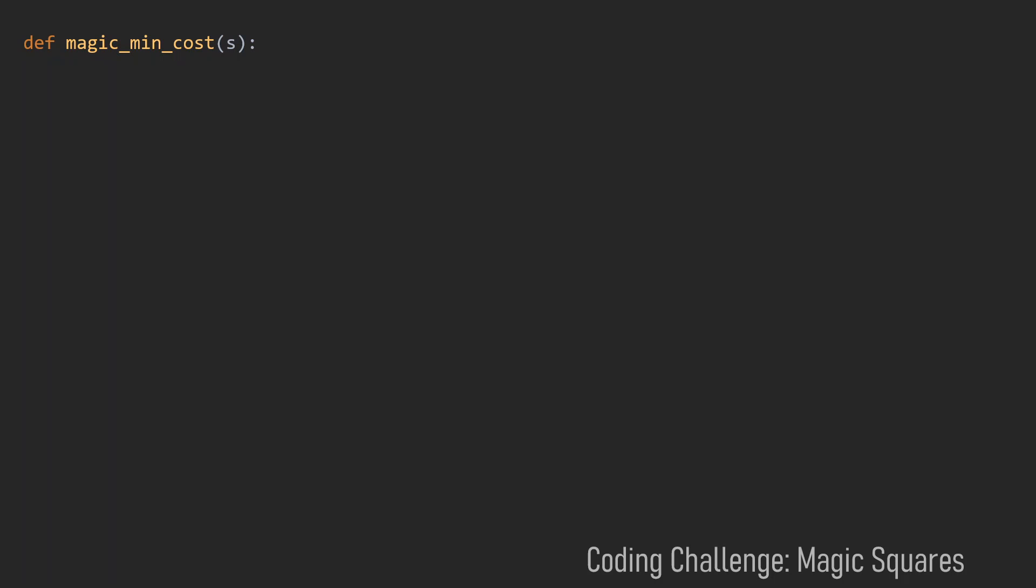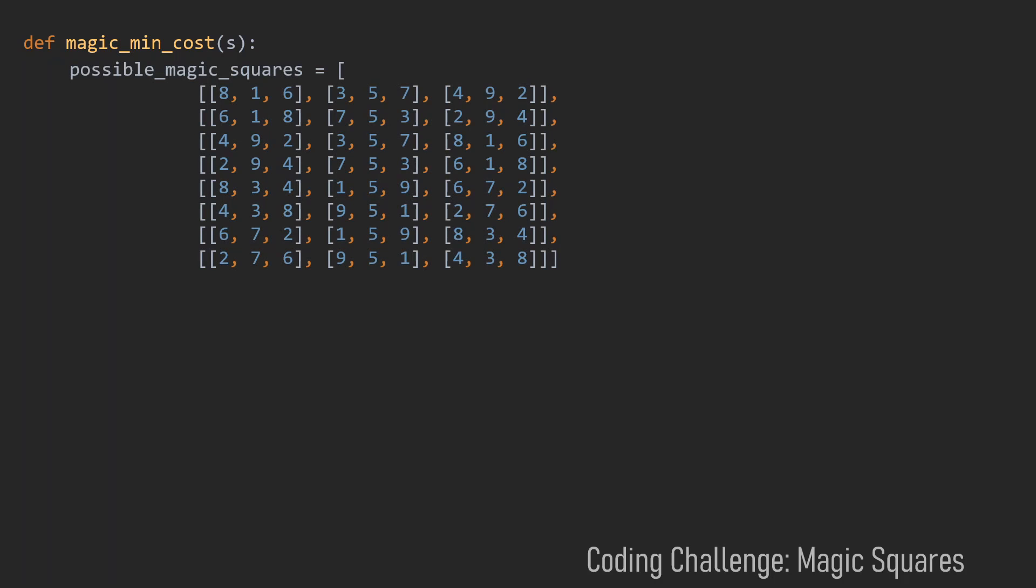Let's just define a function called magic_min_cost and pass this function our non-magic square. Then let's collect all the possibilities in this list here. Then we store our minimal cost in this variable here. In the beginning this will be infinity.